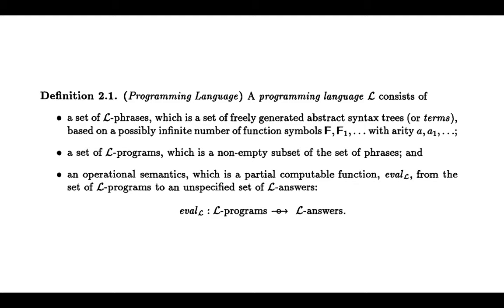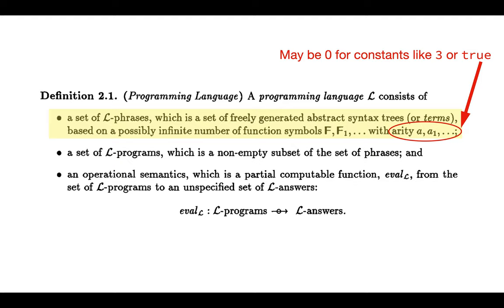Now let's dive into some formal definitions. We have three distinct features of a programming language. First, the set of L phrases — these are just the abstract syntax trees. Function symbols like plus have arity two, meaning they take two arguments. Constants like true, false, or seven are function symbols of arity zero. So the set of L phrases is just the set of abstract syntax trees.